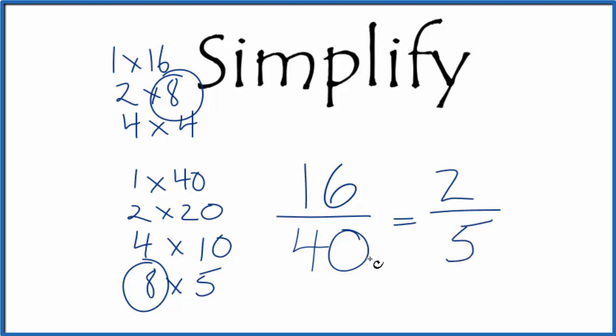So 16 over 40, that simplifies or reduces to 2 fifths. We can't reduce this any further.